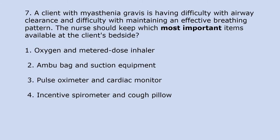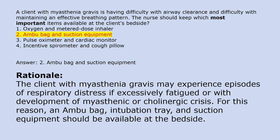A client with myasthenia gravis is having difficulty with airway clearance and maintaining an effective breathing pattern. The nurse should keep which most important items available at the client's bedside? 1. Oxygen and metered dose inhaler. 2. Ambu bag and suction equipment. 3. Pulse oximeter and cardiac monitor. 4. Incentive spirometer and cough pillow. Answer 2. Ambu bag and suction equipment. Rationale: The client with myasthenia gravis may experience episodes of respiratory distress if excessively fatigued or with development of myasthenic or cholinergic crisis. An Ambu bag, intubation tray, and suction equipment should be available at the bedside.